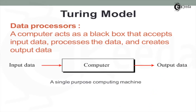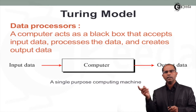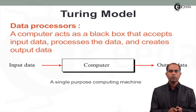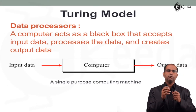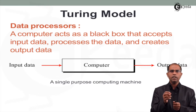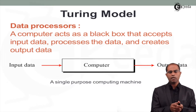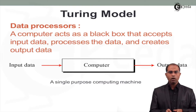The basic module designed around Turing's concept is a computer that accepts some input and produces some output. You can treat this computer as a black box which accepts some data, processes that data, and then delivers the output.